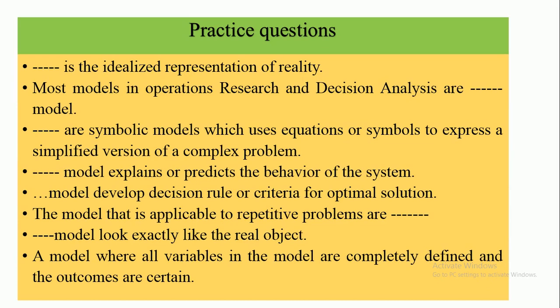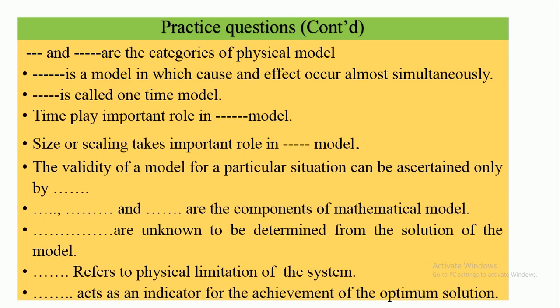Here are some practice questions: A model is an idealized representation of reality. Most models in operations research and decision analysis are — dash — symbolic models. The — dash — model explains and predicts behavior. The — dash — model develops decision rules. The model applicable to repetitive problems — dash — looks exactly like the real object. Iconic and analog are the categories of physical models. The — dash — model is a one-time model where cause and effect occur simultaneously.